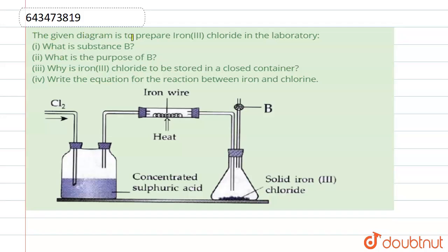The given diagram is to prepare iron(III) chloride in the laboratory. First question: What is substance B? Second: What is the purpose of B? Third: Why is iron(III) chloride to be stored in a closed container? And write the equation for the reaction between iron and chlorine.